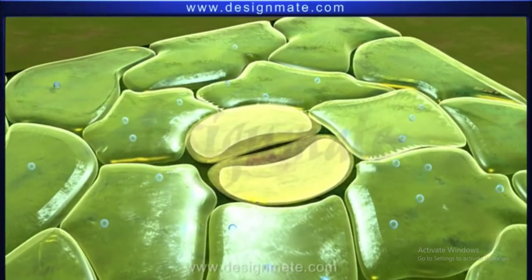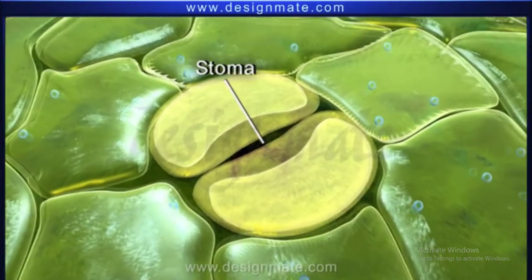Each stoma is a small aperture surrounded by two guard cells.